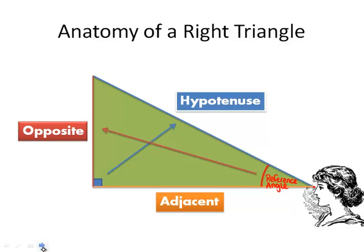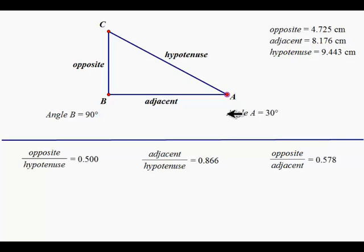Understanding these names is going to be really important in forming the proper proportions that we will need. Here's an example of a right angle triangle. Our angle of reference is A, and our opposite, adjacent, and hypotenuse are labeled according to it. In this case, angle A is 30 degrees. We have also measured every side and we're considering the relationships between those sides.